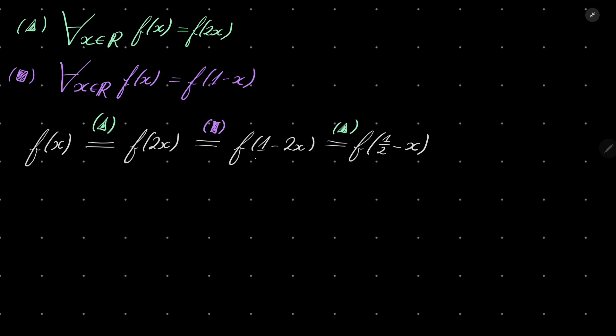And now let's notice that this can be written as f(1 - (x + 1/2)). Because 1 minus 1/2 is 1/2 and we have minus x.